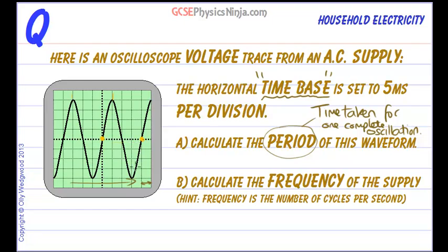So we've got 4 divisions, and each division is worth 5 milliseconds. So 4 times 5 milliseconds. Now I'm keeping this in milliseconds just for ease of calculation for the moment. That will give us 20 milliseconds. And I'm going to call that the period. The period has a symbol capital T.